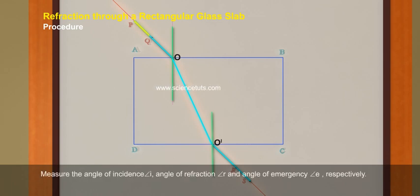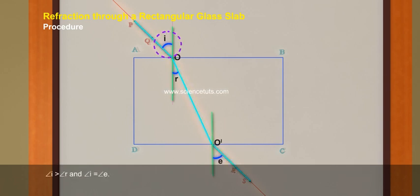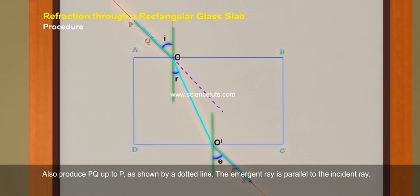Measure the angle of incidence, angle I, angle of refraction, angle R and angle of emergence, angle E respectively. Angle I greater than angle R and angle I equals to angle E. Also produce PQ up to P as shown by a dotted line. The emergent ray is parallel to the incident ray.